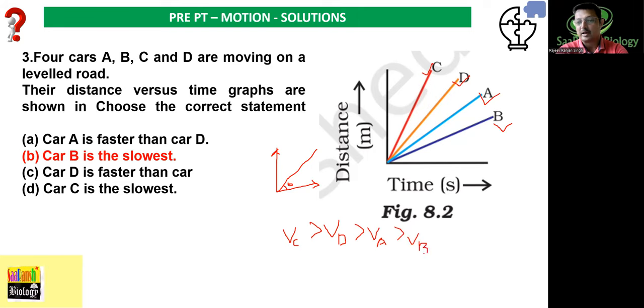Now examine the statements carefully. Car A is faster than D - no, that's wrong. D is faster than A. Car B is slowest - yes, absolutely, car B is slowest. This is the correct answer. Is there any other correct answer? Car D is faster than C - no. Car C is fastest. Car C is slowest - absolutely not, car C is going to be the fastest. This is how you can look into the graph and extract meaning. Such questions have probability of appearing, so understand carefully how to interpret from graphs.